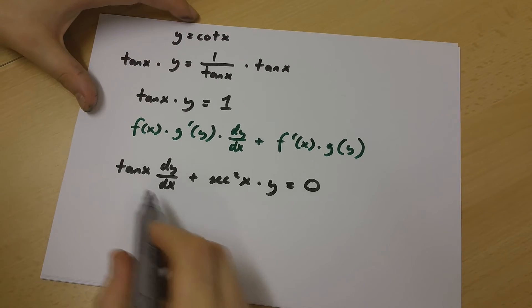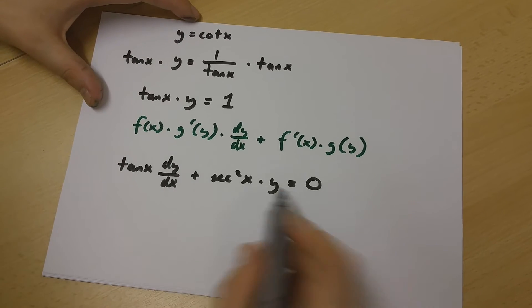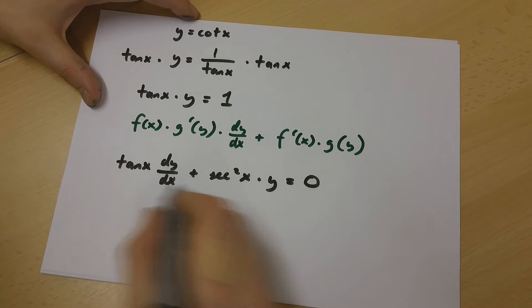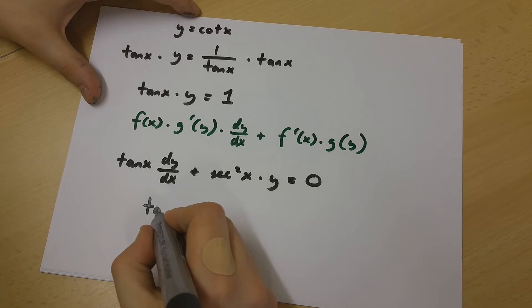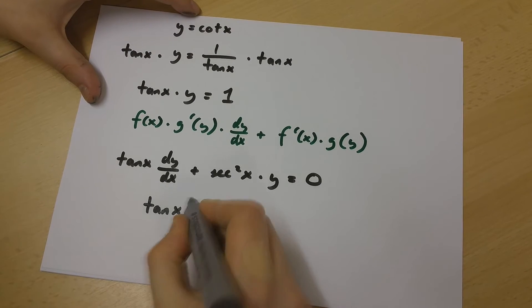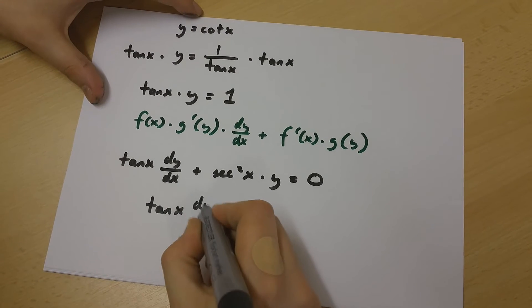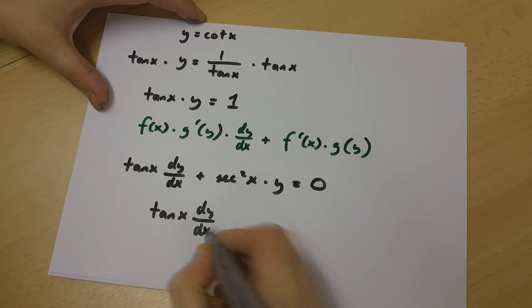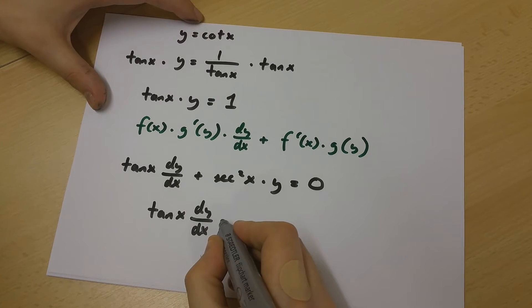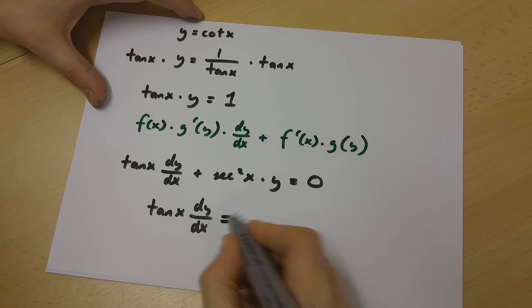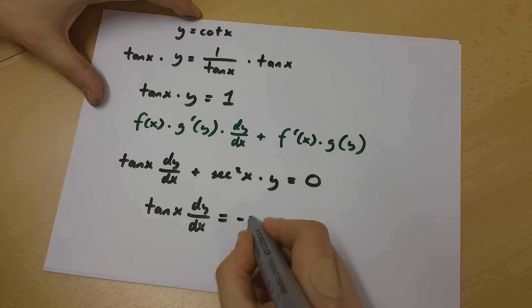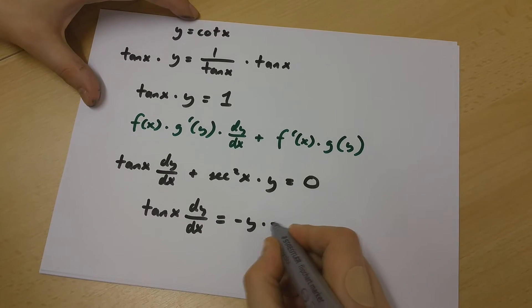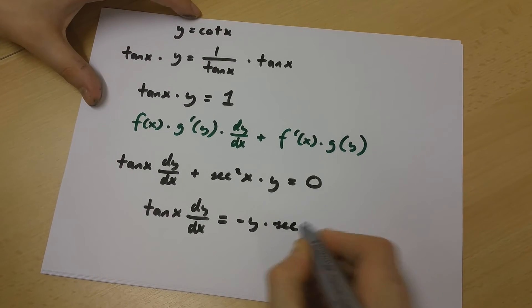Now let's transform this equation. From here we're going to get tan x multiplied by dy over dx equals minus y multiplied by sec x squared.